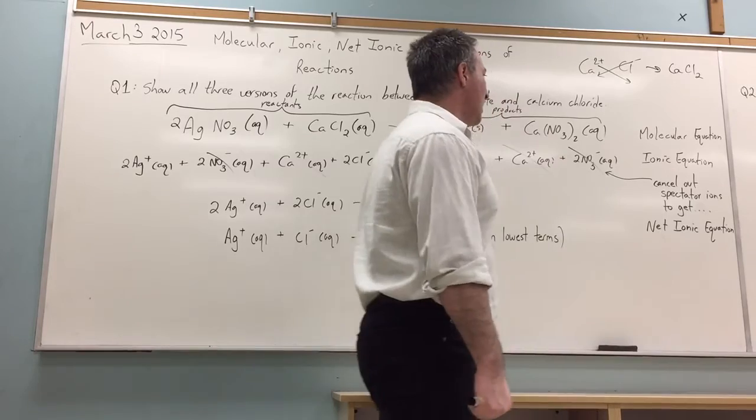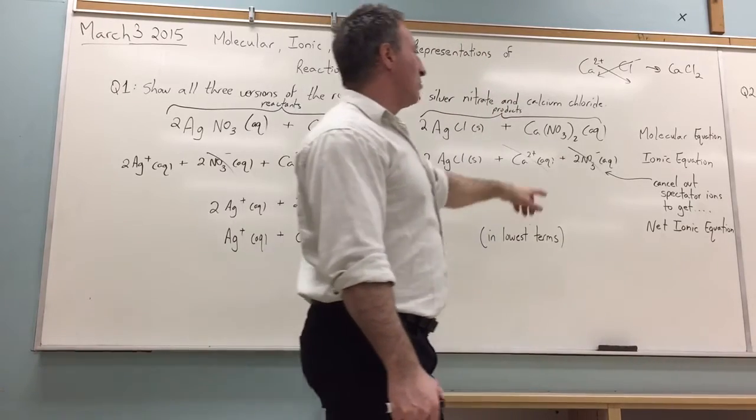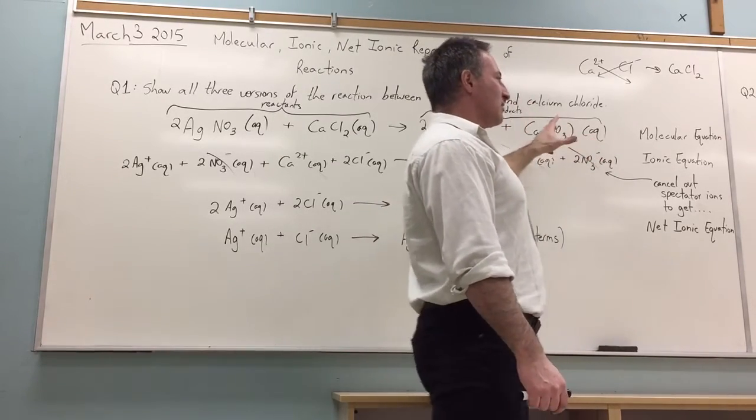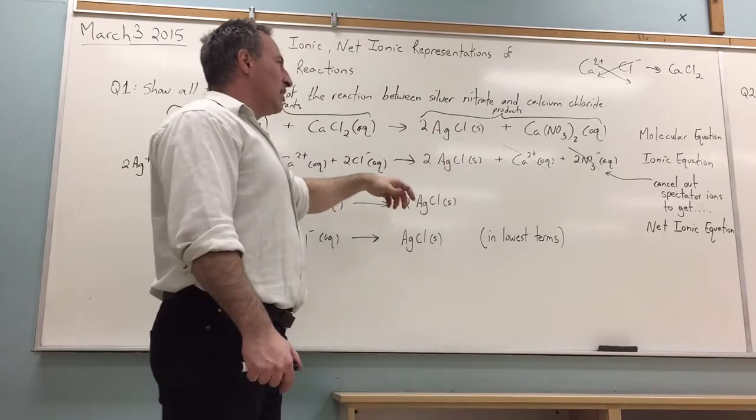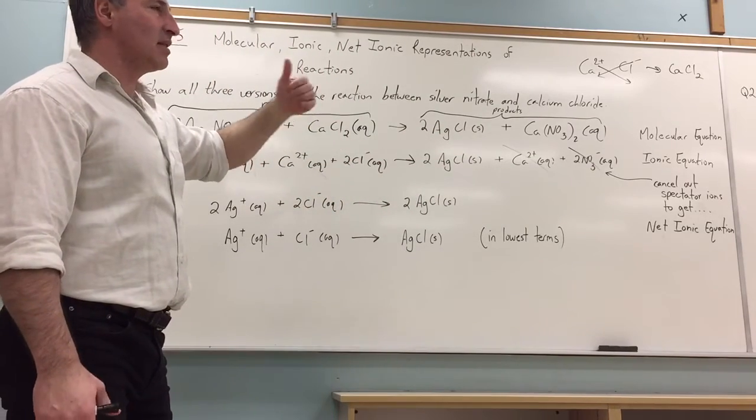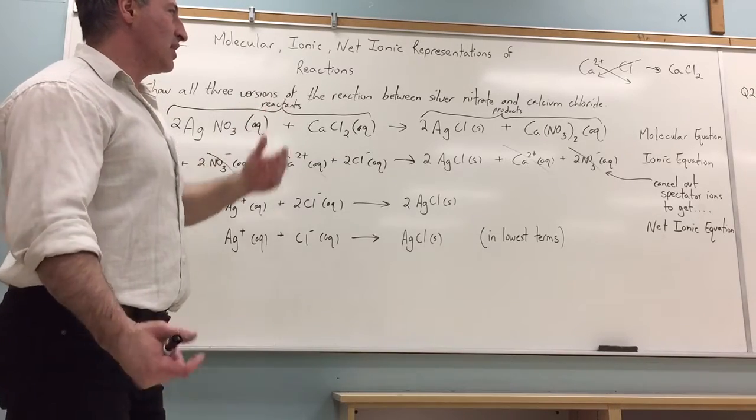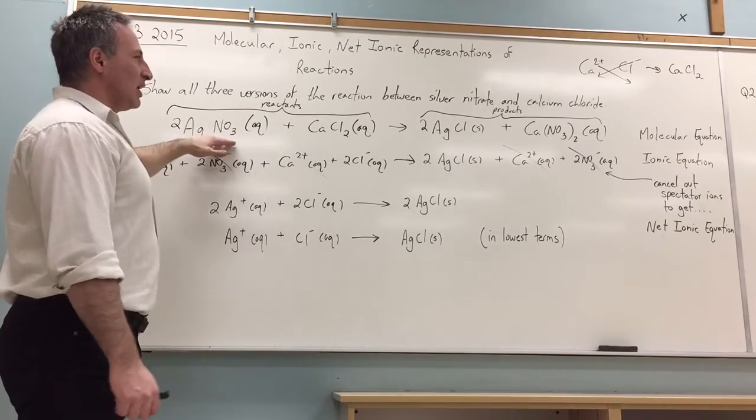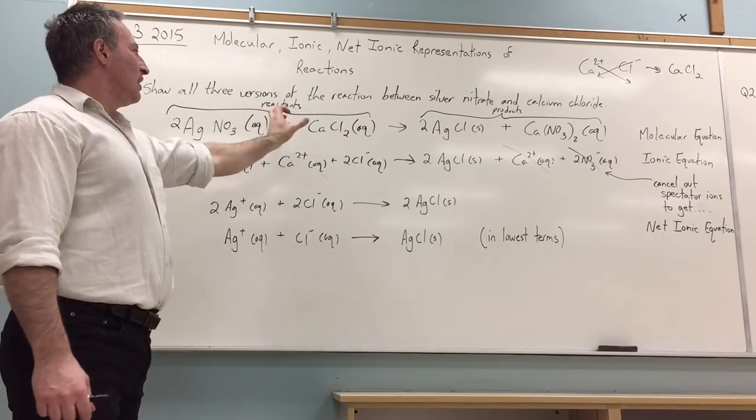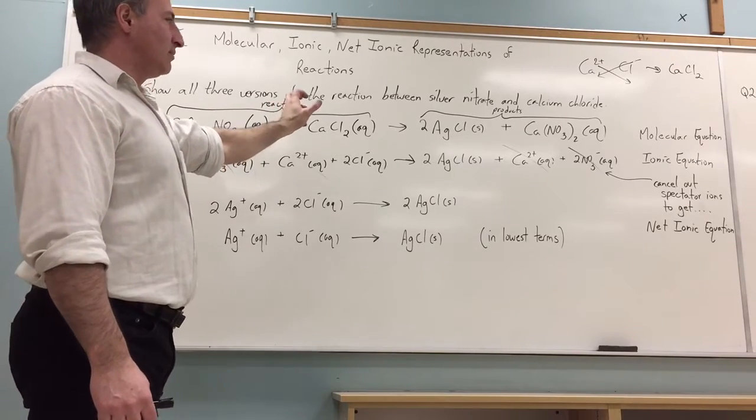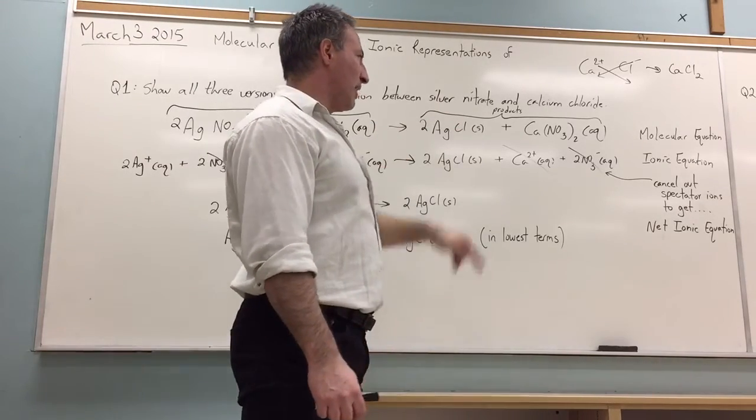The other stuff, calcium nitrate, stays in solution, so I put the AQ symbol after it. It doesn't form a precipitate. The calcium and the nitrate are more attracted to the water than they are to each other, so they stay in the solution. That is the molecular equation, and we show everything combined for both reactants and products.